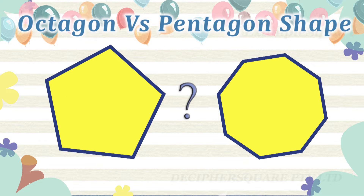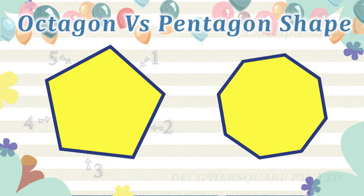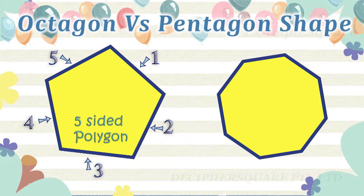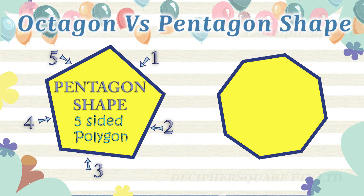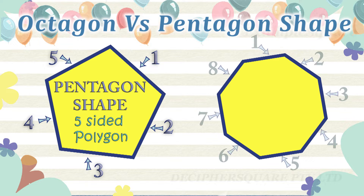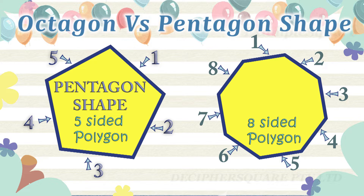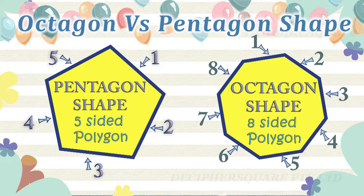Which one of these is an octagon shape and which one of these is a pentagon shape? A pentagon shape is a polygon with five sides and five corners. This is a pentagon. An octagon shape is a polygon with eight sides and eight corners. This is an octagon.